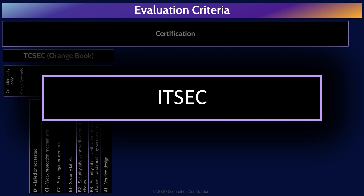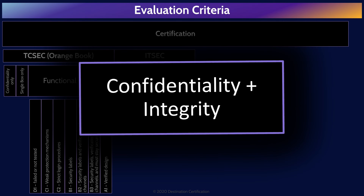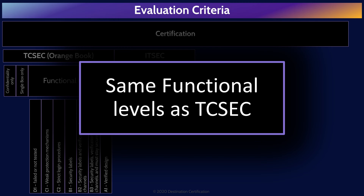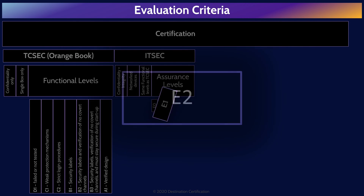ITSEC, the Information Technology Security Evaluation Criteria, is a big improvement on the older TCSEC. ITSEC can be used to evaluate not just confidentiality but also integrity, and it can evaluate devices connected to a network. ITSEC uses the same functional levels as TCSEC — D1, C1, C2, B1, etc. A final major improvement is that ITSEC evaluates not just functionality but also assurance. Functionality means what the system should do; assurance means how we verify it's working correctly. The assurance levels are called E-levels, ranging from E0 to E6.